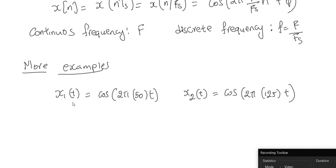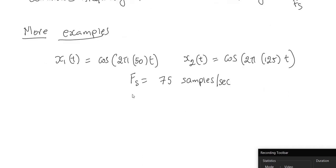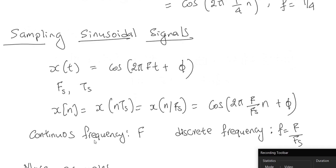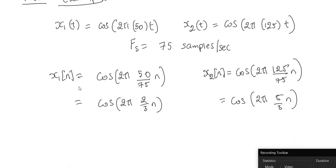Let's look at some more examples. I have two signals: x1 of t is a continuous time cosine with continuous frequency 50 Hz, and x2 of t is a continuous time cosine with frequency 125 Hz. The units for these frequencies are in hertz. The sampling rate is 75 samples per second. We want to know what will be the discrete time signals when we sample these with this sampling rate. Using the formula, the discrete time frequency is capital F over Fs. For x1, the discrete frequency is 50 over 75, which is two-thirds. For x2, the discrete frequency is 125 over 75, which is five-thirds.